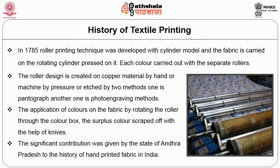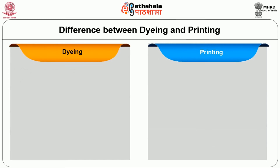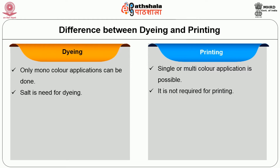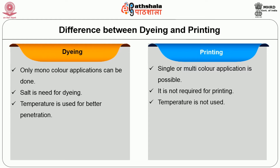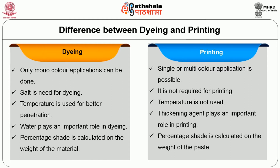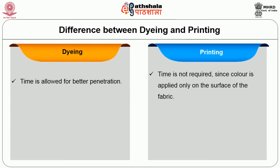Now we see the difference between dyeing and printing. In dyeing, only mono color can be applied, whereas in printing, single or multi-color application is possible. Salt or chemicals are needed for dyeing but not required in printing. In dyeing, temperature is used for better penetration, but in printing, temperature is not needed. Water plays an important role in dyeing, but in printing, a thickening agent plays an important role. In dyeing, percentage shade is calculated on the weight of the material; in printing, percentage shade is calculated on the weight of the paste.